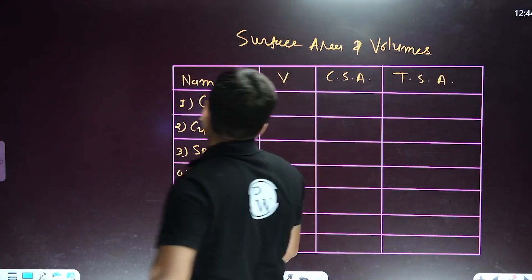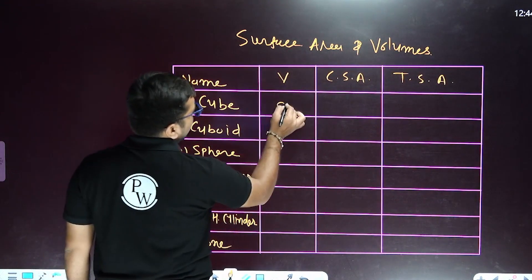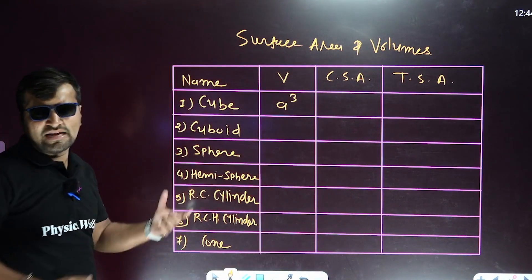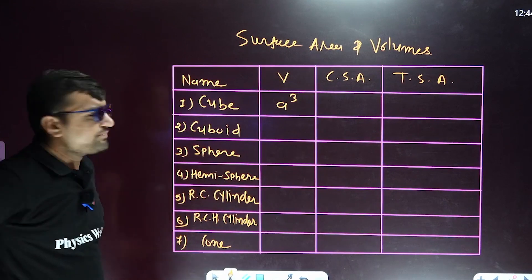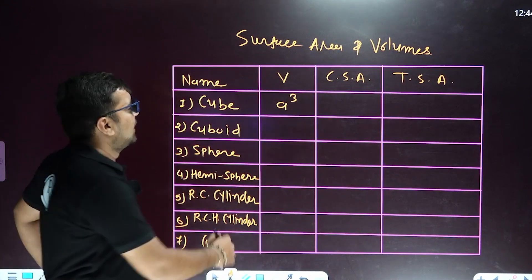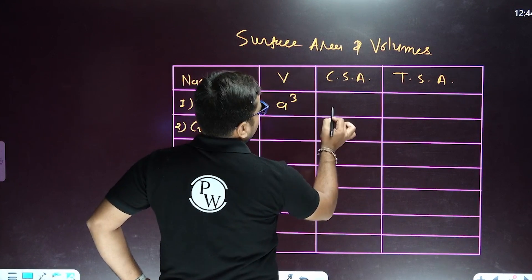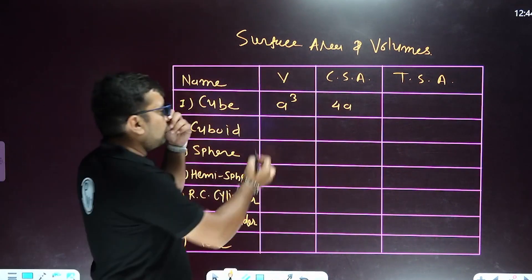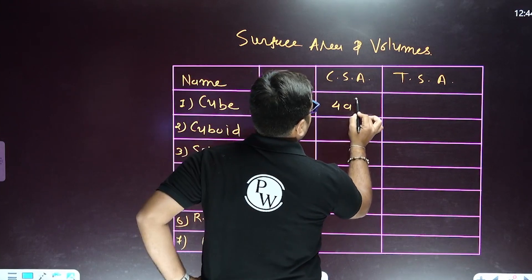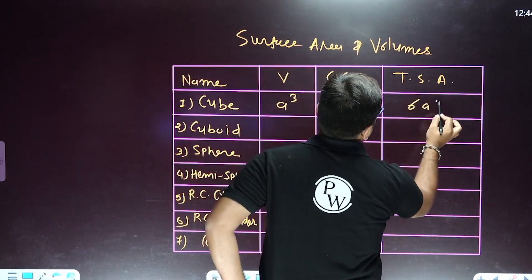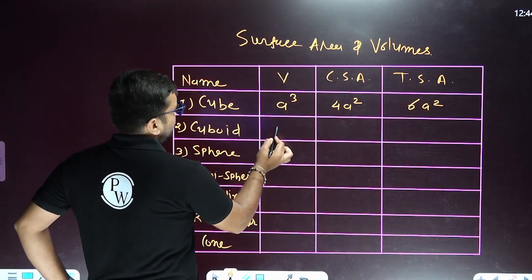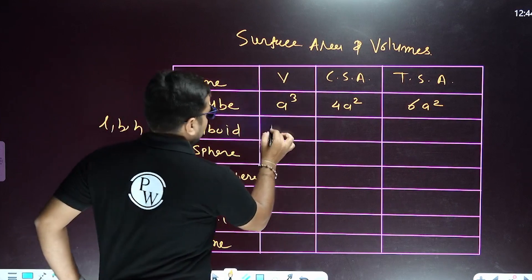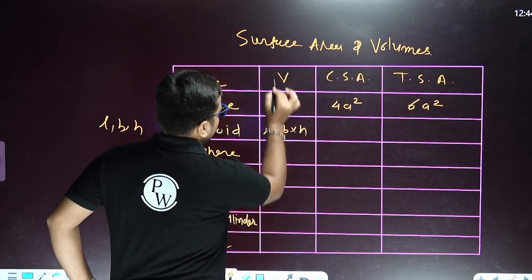Chapter 12: Surface Area and Volume. For the cube, the volume is side cubed — take the side as a. The curved surface area, neglecting top and bottom, is 4 times side squared. The total surface area is 6 times side squared.